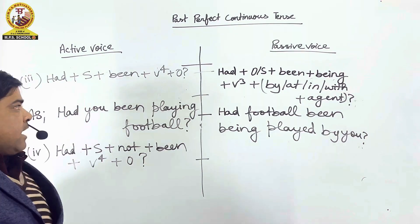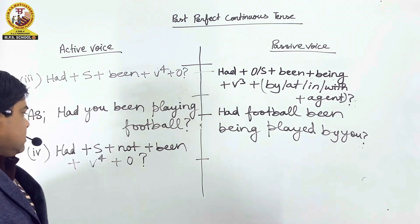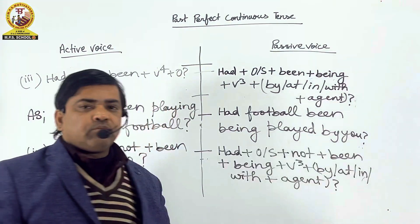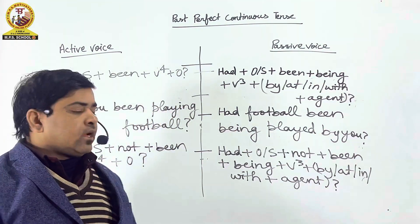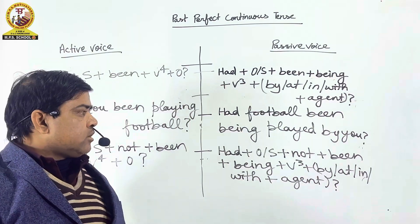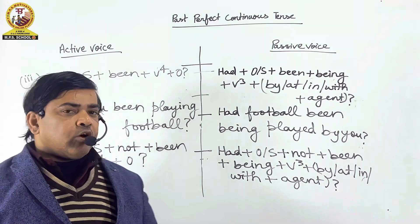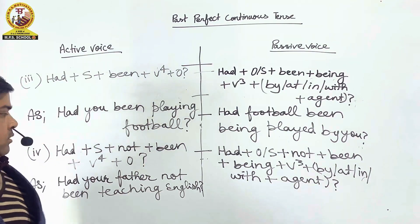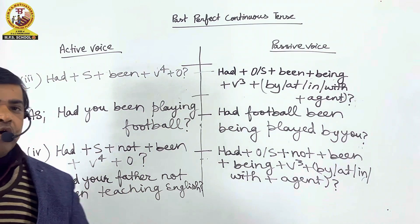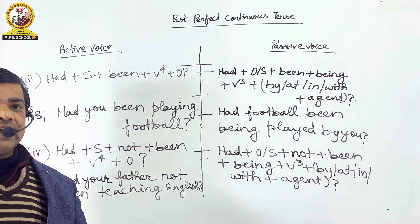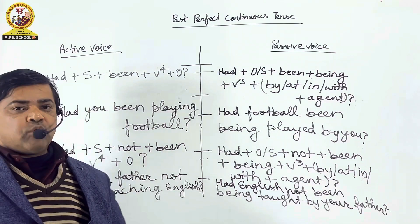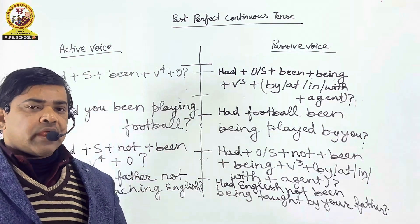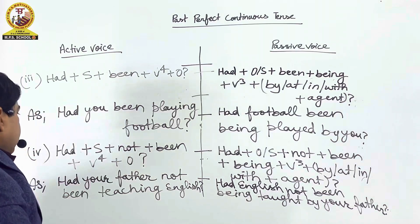The fourth structure formula in active voice is: had + subject + not + been + V4 + object. In passive voice: had + object/subject + not + been + being + V3 + by/at/in/with + agent. In active voice: 'Had your father not been teaching English?' In passive voice: 'Had English not been being taught by your father?' Now you can take a screenshot.